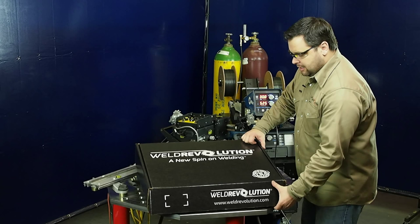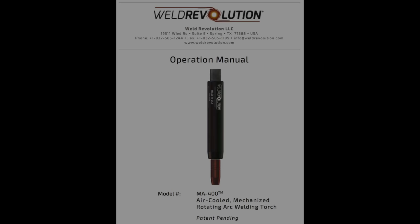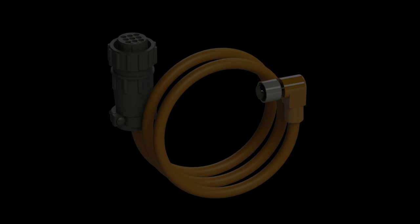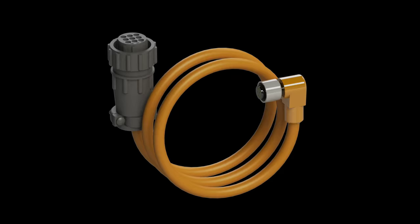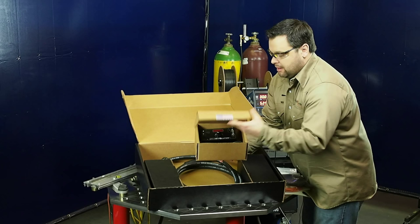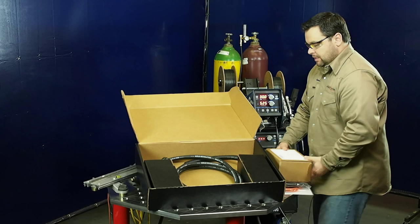First, let's open the box and see what you get. With this package, you get an operational manual, a control cable, a trigger cable, the control box and mounting hardware, and the cable assembly and welding torch itself.